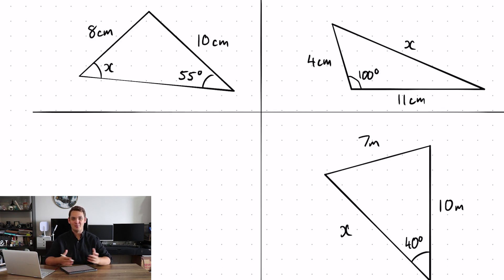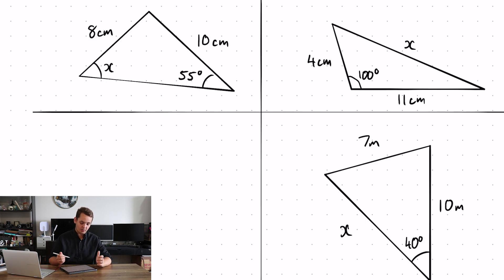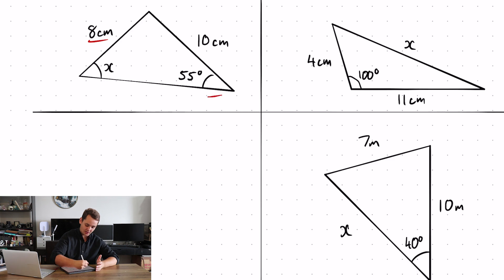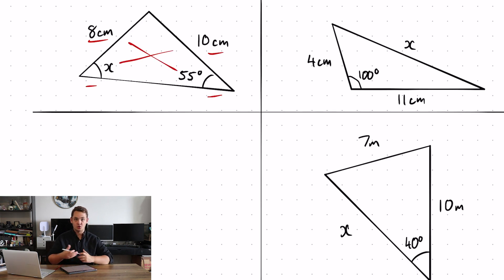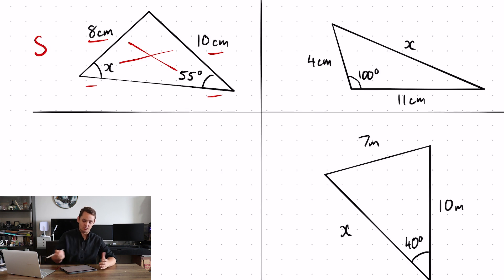Okay, hopefully you managed to work it out. So let's have a look at the top left one. We've got a side opposite an angle and another side opposite another angle — so this was the sine rule.